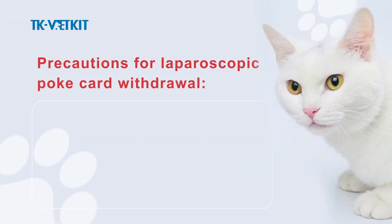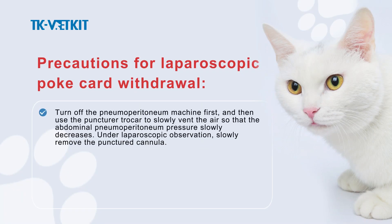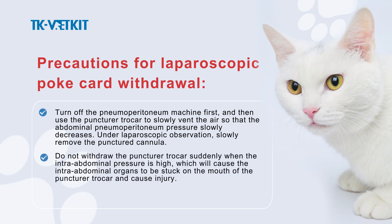Precautions for laparoscopic trocar withdrawal. Turn off the pneumoperitoneum machine first, then use the punctured trocar to slowly vent the air so that the abdominal pneumoperitoneum pressure slowly decreases. Under laparoscopic observation, slowly remove the punctured cannula. Do not withdraw the punctured trocar suddenly when intra-abdominal pressure is high, as this will cause intra-abdominal organs to be caught on the mouth of the trocar and cause injury.